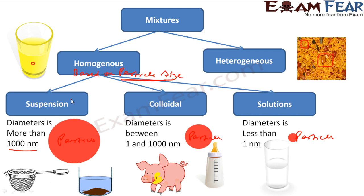So if the particle is big — more than 1000 nanometers — we call it a suspension. For example, if you take water and mix mud in it, that is a suspension because the mud particle size is more than 1000 nanometers. If you keep this kind of suspension for a long time, since the particles are big, they all settle down. If you take water and mud, mix it, and keep it for 3–4 hours, you will see that the mud settles down.